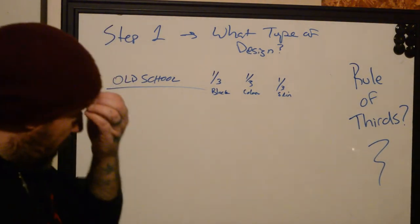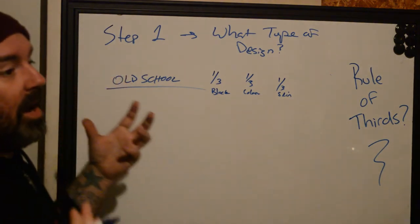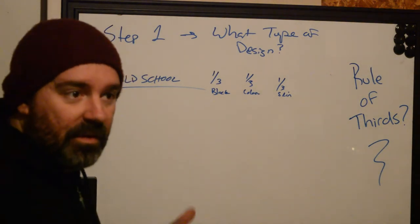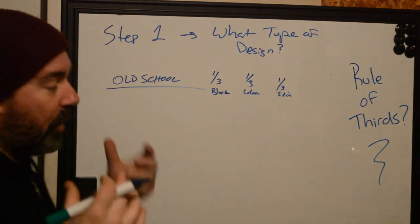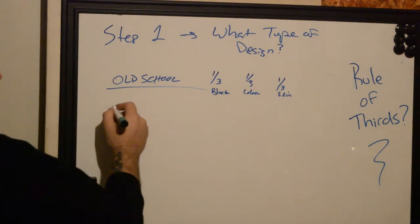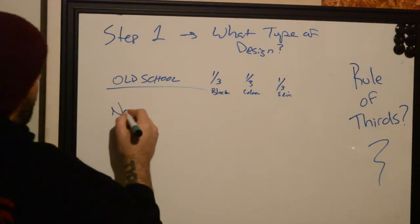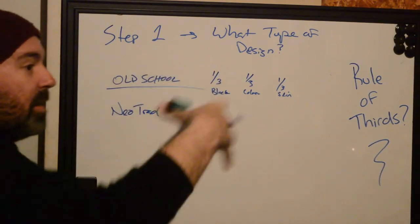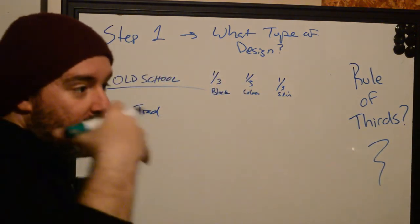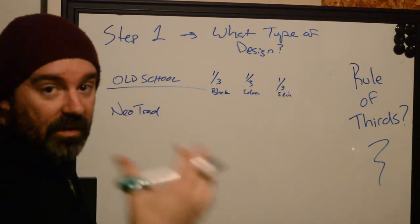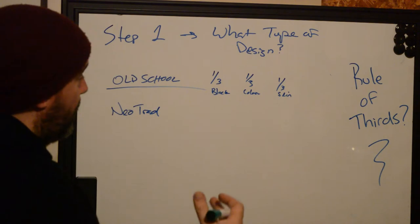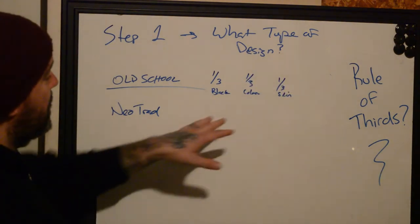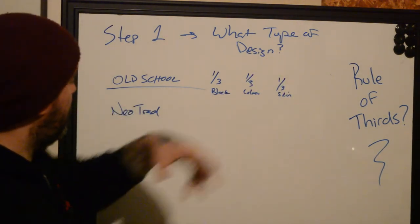Now we're going to get into other things that have more depth in the design — like neo-traditional stuff, which can have foreground and background elements. When it's simple, we can keep the actual application of rule of thirds simple: just break something into three parts and do it.